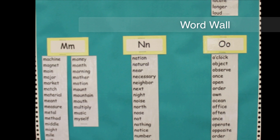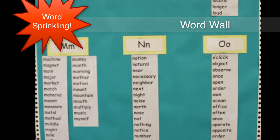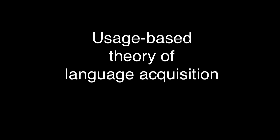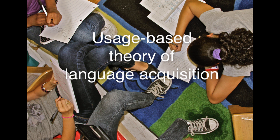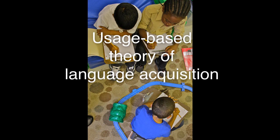At the beginning of the year, teachers post the most frequently used words on the word wall in primary classrooms. Then as time goes on, we do what we call word sprinkles — as kids need words, we give them words on index cards and those get posted on the word wall, adding more and more over time. We incorporate a usage-based theory of language acquisition into learning cultures, which means we believe people learn language through using language. So we give children access to words as they need to use them — that's how they learn words and language.